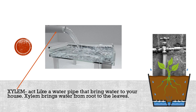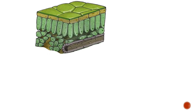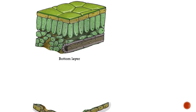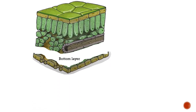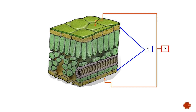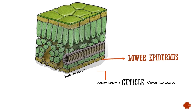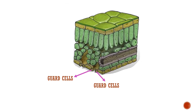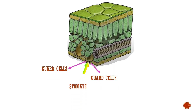Now I'm going to introduce the bottom layer of the leaf. Two of these layers are pretty similar: they are the lower epidermis and the cuticle at the very bottom of the leaf. Now let's introduce the guard cell. Look at the small openings that permit gas exchange — that is the stoma.